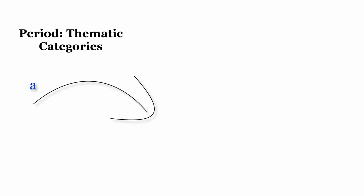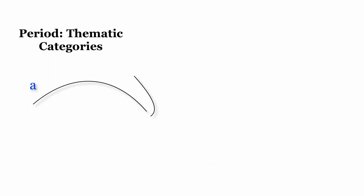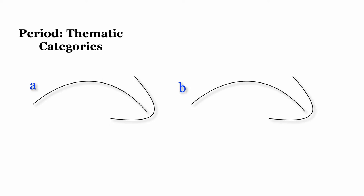We generally categorize periods thematically in one of two ways. When both phrases begin with highly similar melodic material, we call them parallel phrases. When both phrases begin with different melodic material, we call them contrasting phrases.